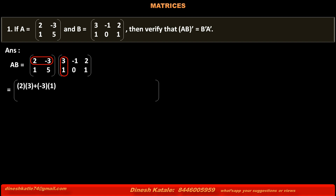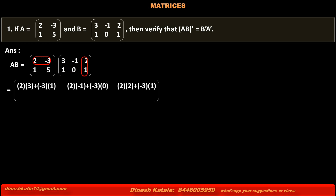1st row of matrix A into corresponding elements of 1st column of matrix B, that is 2×3 plus (-3)×1. 1st row of matrix A into 2nd column of matrix B, that is 2×(-1) plus (-3)×0. 1st row of matrix A into 3rd column of matrix B, that is 2×2 plus (-3)×1. 2nd row of matrix A into 2nd column of matrix B, that is 1×(-1) plus 5×0.